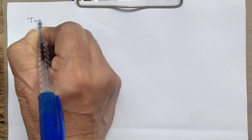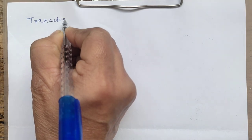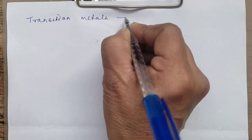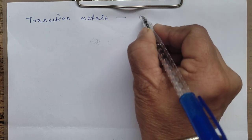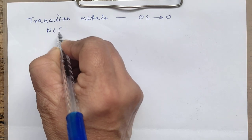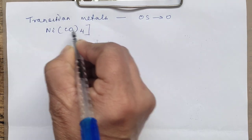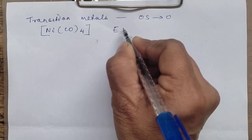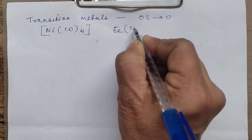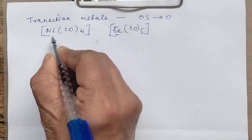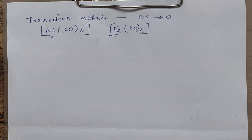Another point about oxidation states: transition metals also form compounds in which the oxidation state can be 0. For example, the coordination complexes Ni(CO)4 — nickel tetracarbonyl — or Fe(CO)5 — pentacarbonyl iron. In these, the central atom is exhibiting 0 oxidation state.